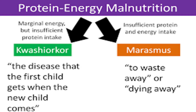Other symptoms of marasmus may include diarrhea, dehydration, behavioral changes, dry brittle hair, and loose skin. Marasmus can be treated with a high-calorie, protein-rich diet. Severe prolonged marasmus may result in permanent mental retardation and impaired growth.